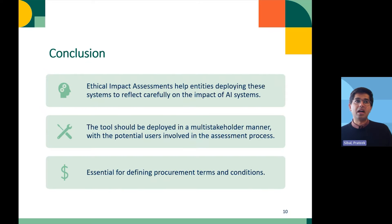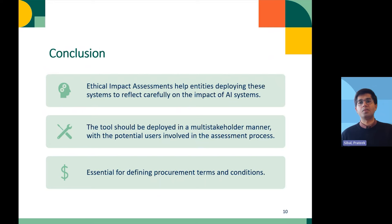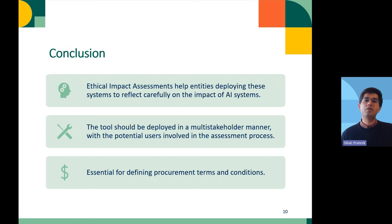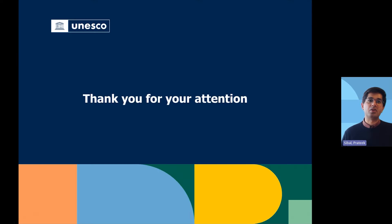To conclude this part, an ethical impact assessment helps entities deploying AI systems to reflect carefully on their impact. These tools should always be deployed in a multi-stakeholder manner with potential users involved in the assessment process. Finally, if you are in an organization that is procuring AI systems, going through this ethical impact assessment tool will give you valuable information on how to frame the terms of reference of procurement contracts. With this, I would like to thank you for joining us on this journey and I hope you had a good learning experience.